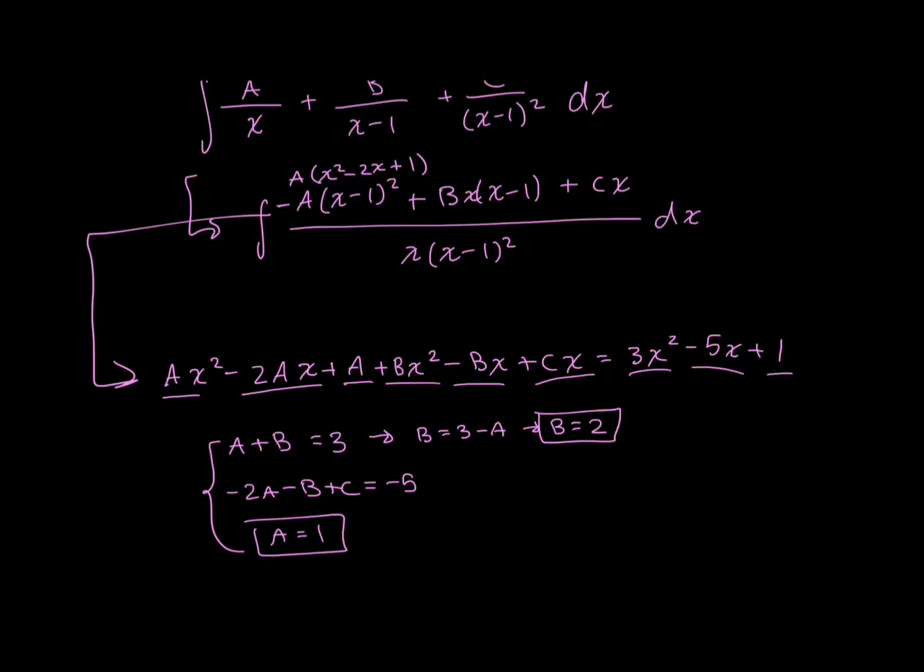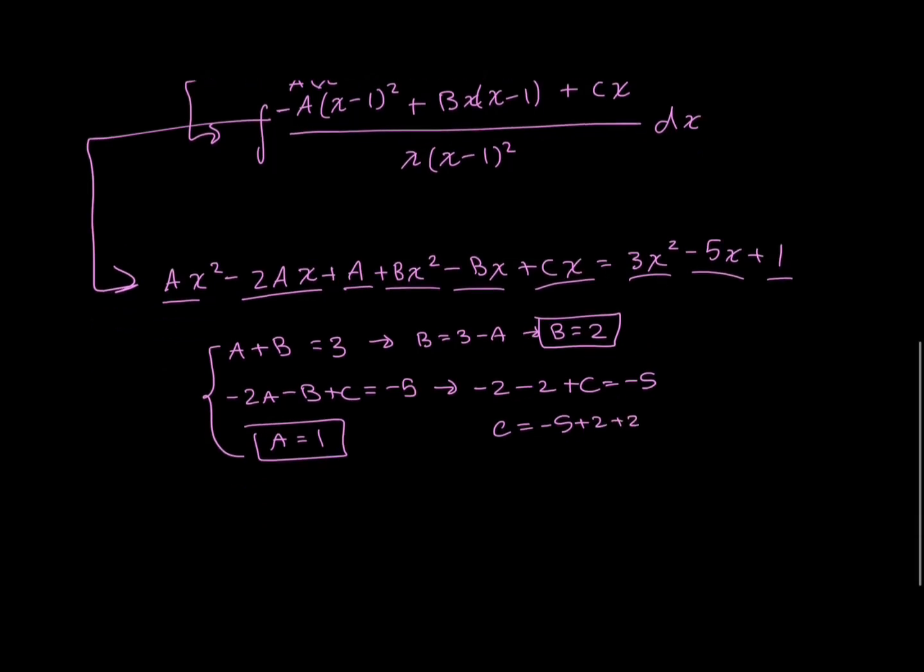And now, just to find C, I plug in what I know is 2 and A, what I just found. So this is going to be equal to negative 2 minus 2, plus C is equal to negative 5. So that's C is equal to negative 5 plus 2 plus 2, which is equal to negative 1.